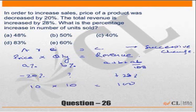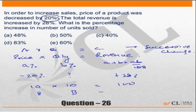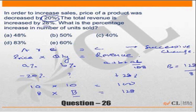As per the question, the price decreased by 20%, so price became 8. The new quantity I do not know, so let me call it B. So 8 into B should be equal to 128. The new value of B will be equal to 128 divided by 8, which is equal to 16.